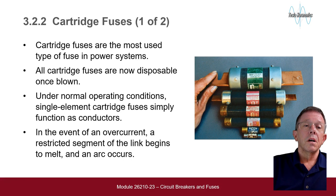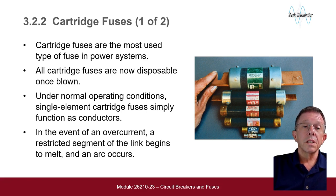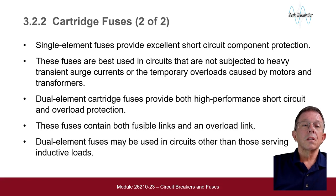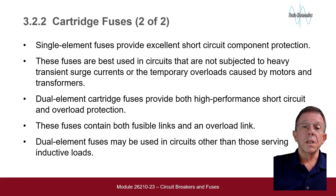Cartridge fuses are the most used type in fused power systems. All cartridge fuses are now disposable once blown. Under normal operating conditions, single element cartridge fuses simply function as conductors. In the event of an overcurrent, a restricted segment of the link begins to melt and an arc occurs. Single element fuses provide excellent short circuit component protection and are best used in circuits not subjected to heavy transient surge currents or temporary overloads caused by motors and transformers.